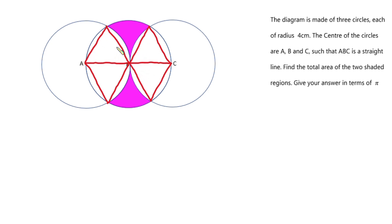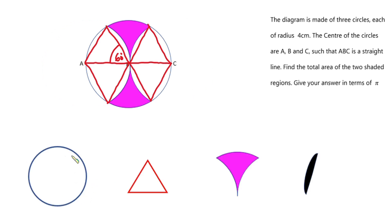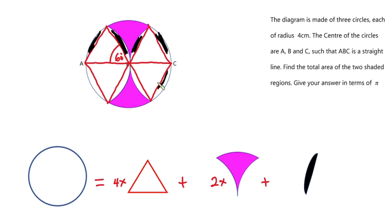Since the triangle is an equilateral triangle, it means that the angle here is 60 degrees. Now let's pay attention to the middle circle — these ones are not important anymore. So this is the whole circle. Now this circle equals the area of the equilateral triangle — we have four of them, so I'm going to multiply it by four — then plus the area of the shaded region. We have two of them, this one and this, so I'm going to multiply this one by two. Then plus the area of the circular segment. We have eight of them, and so I'm going to multiply this one by eight.